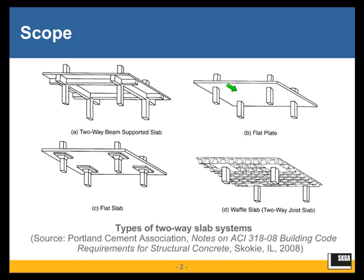Flat plates are extremely popular around the country. The formwork is simple and it is the shallowest slab system. The problem with the flat plate is that as the span gets longer or the load gets heavier, or both of these happen at the same time, we have a problem with two-way shear or punching shear around the columns.